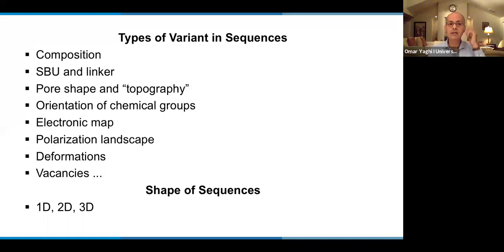So this is very, very exciting because now I can understand as a molecule floating in the pore, exactly my environment. And we also think that this is part of potentially when you are sequencing. These are bits of information that are arranged in a sequence and perhaps could be used in information technology. So the types of variants that I have been talking about pertain to composition, SBU and linker. But you could pick the variant that you like, like pore shape and topography, orientation of chemical groups could be a variant. If you're interested in the electronic character of the pores, one can focus on that. Polarization effects, deformations, even vacancies. And the shape of your sequence could be 1D, could be 2D, could be 3D. And the components could be 0D or 1D. The 2D component could be 0D and 1D. But the sequence theme that you choose is what I'm showing here, 1D or 2D or 3D.